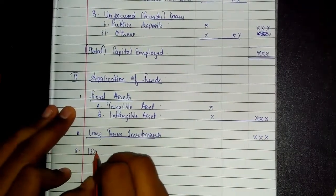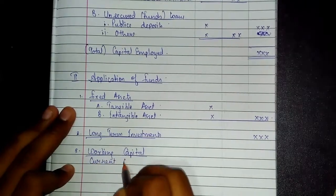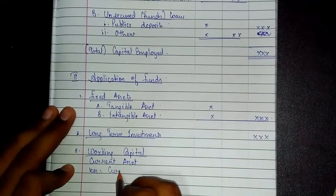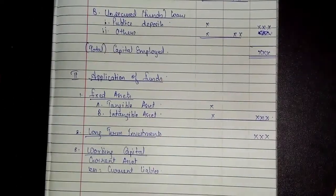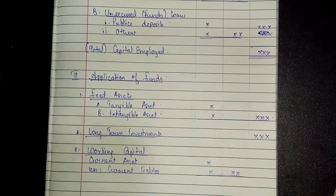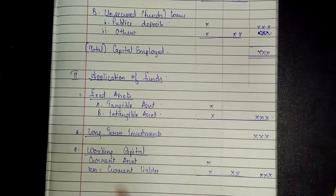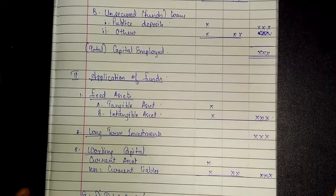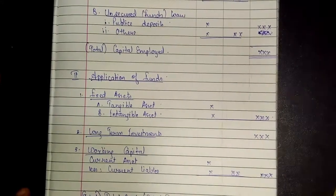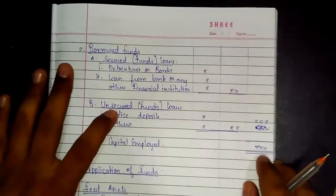Part 3 is working capital, which is very important. Working capital simply means current assets less current liabilities. We get a net figure which goes in the outer column. When we total all three — fixed assets, long-term investments, and working capital — we get total funds employed, also known as total capital employed. This matches the capital employed on the sources side.